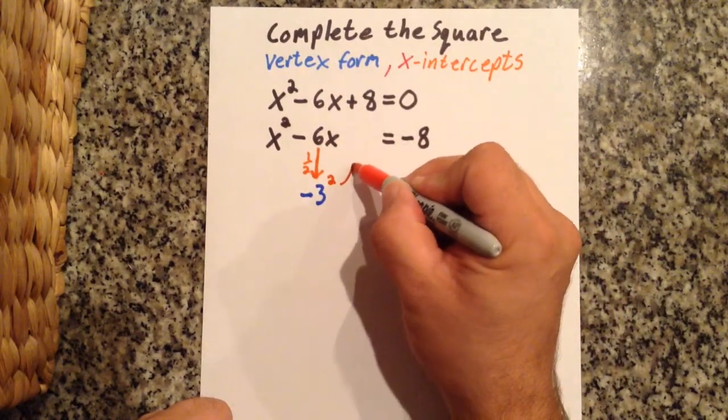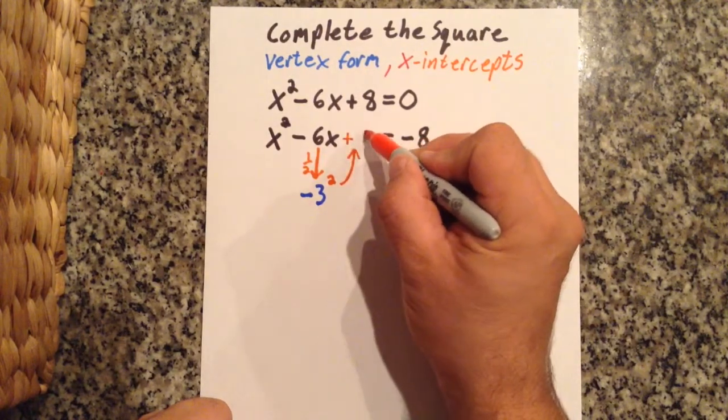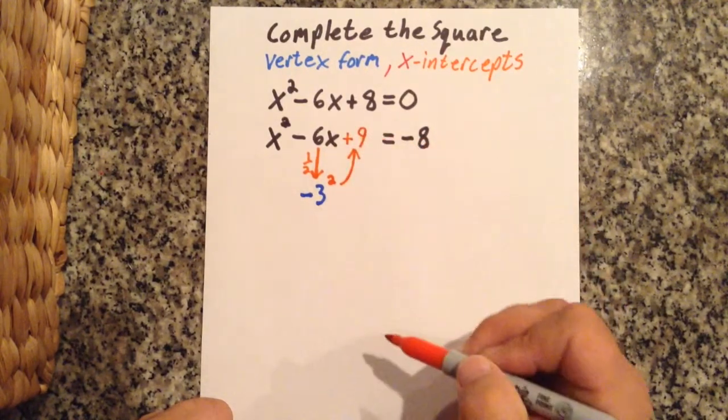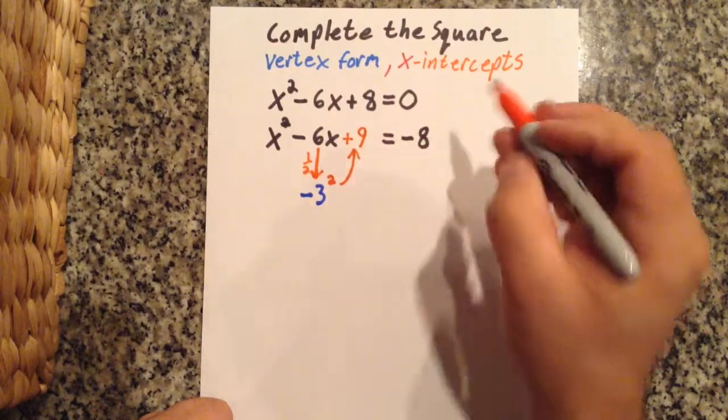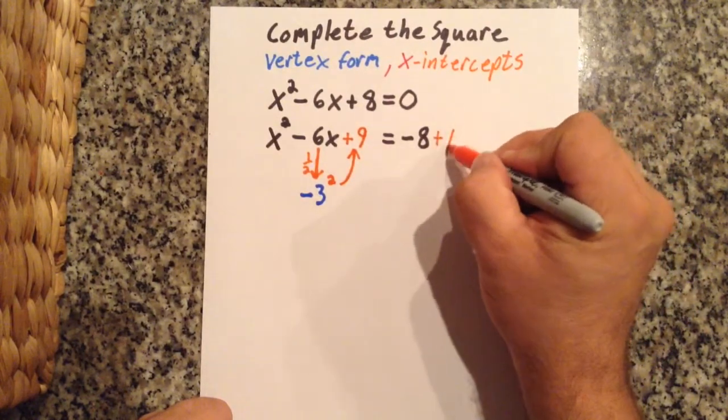Well, that's going to be 9. Now this gives me a perfect square trinomial. If I add 9 to this side, I have to add 9 to the other side as well.